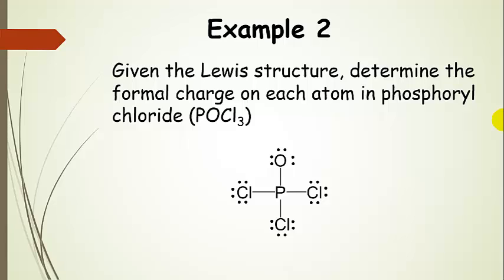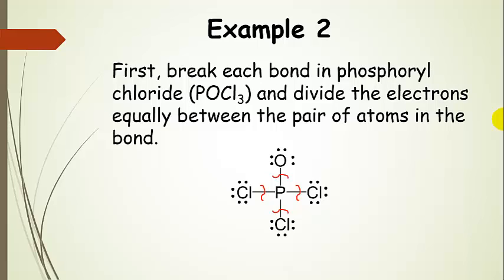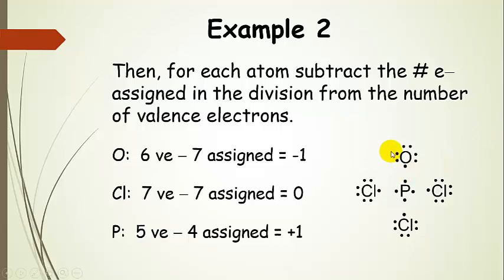The second example is a bit harder. Here's a Lewis structure for phosphoryl chloride. In the future you'll be drawing these yourself and then calculating formal charge, but right now we'll take this given structure and calculate it. Again, we break each bond and divide the electrons equally. All lone pairs on each atom stay with that atom — we're only dividing the electrons in the bonds.